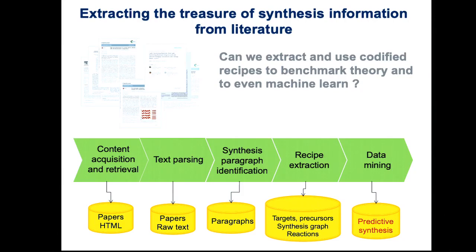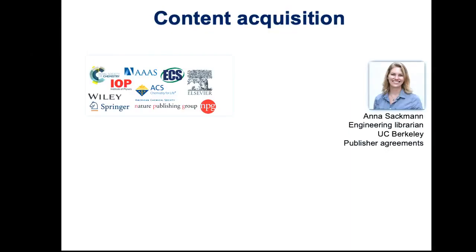This is a big project. We've built a pipeline all the way from content acquisition — because you can't just steal papers from the web, you need licenses — through parsing and finding where synthesis is described. The hardest part is really recipe extraction. The first part is negotiating with publishers. We had a great librarian who helped us negotiate text-mining agreements. We have access to a bit over 3 million papers.